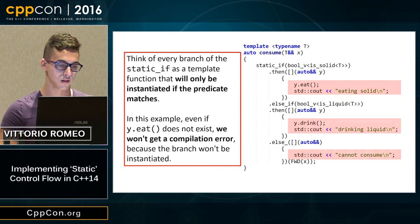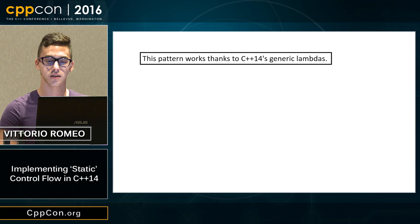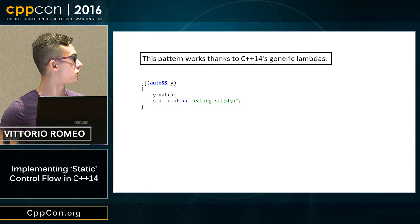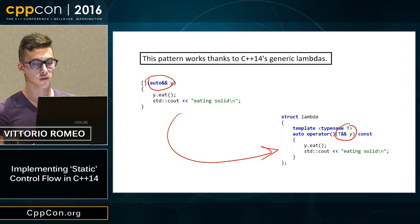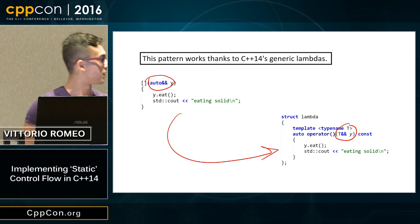This pattern works thanks to C++14's generic lambdas. The compiler transforms each branch into an anonymous struct with a templated operator(). This is the important part: since operator() is templated, it will only be instantiated if it's called. Without generic lambdas, we wouldn't be able to do this cleanly.